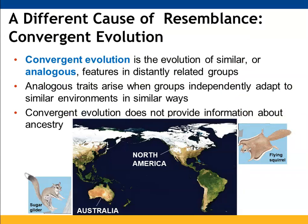Convergent evolution occurs when analogous features — similar features — are seen in distantly related groups. These are not due to homology; they are traits that individual groups of species have adapted to independently based on their environment, often in similar environments. Although they may physically look similar, with convergent evolution these species don't necessarily have an ancestral relationship.